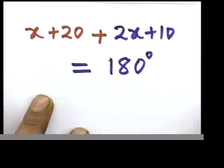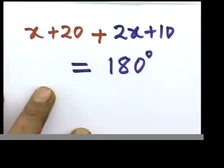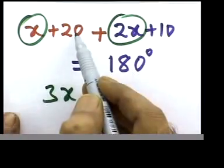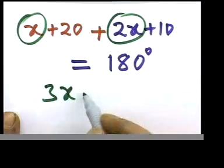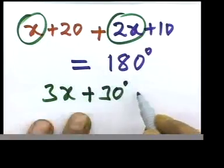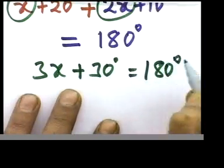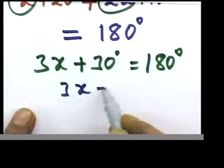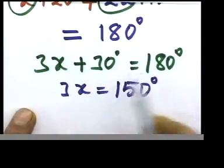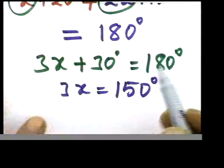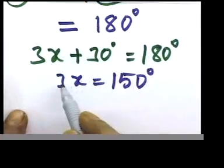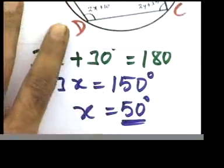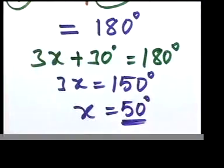Collecting like terms: 2x and 1x gives 3x; 20 plus 10 gives 30. So 3x plus 30 equals 180. Transfer the 30 to the right-hand side: 3x equals 150. Therefore x equals 50. This is not an algebra lesson — just applying the rule to find x.